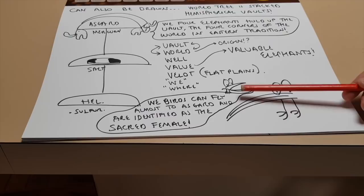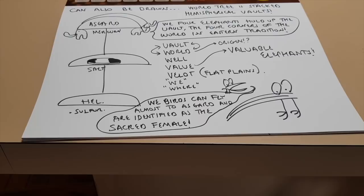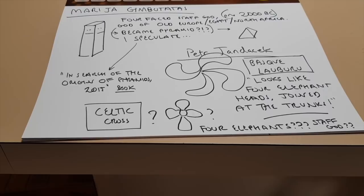In addition, and this is so good, the birds are speaking. Look at that. They're saying we birds can fly almost to Asgard and are identified as the sacred female. And the birds, of course, are perched on top in American versions of the totem pole, because this is a tree. A tree shooting right through the middle of this earth disk up into Asgard. And that's important that it's going through the middle.